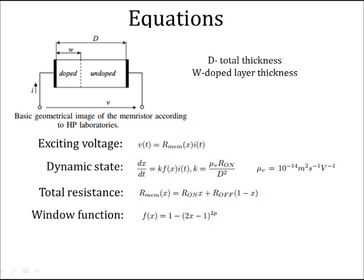The next equation is the total resistance equation. Here R_on corresponds to the case when W equals 0, and R_off is when W equals D.